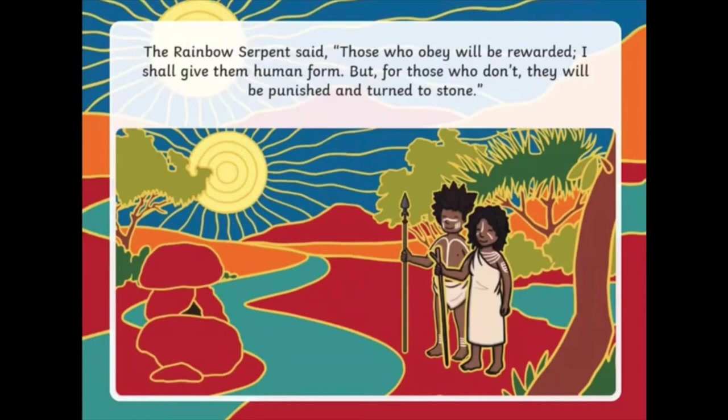The rainbow serpent said, those who obey will be rewarded. I shall give them human form. But for those who don't, they will be punished and turned into stone.